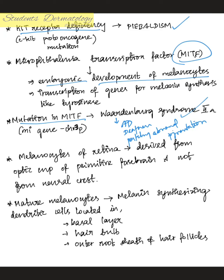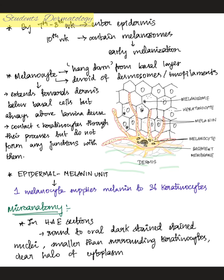As mentioned before, the melanocytes of the retina are derived from the optic cup of the primitive forebrain and not from the neural crest. Mature melanocytes are melanin-synthesizing dendritic cells located in the basal layer, hair bulb, and the outer root sheath of follicles. Around seven to eight weeks of intrauterine life, melanocytes enter the epidermis, and by ten weeks they contain melanosomes, indicating early melanization.